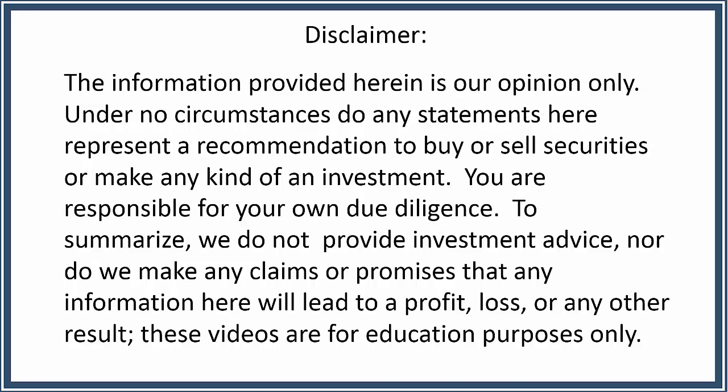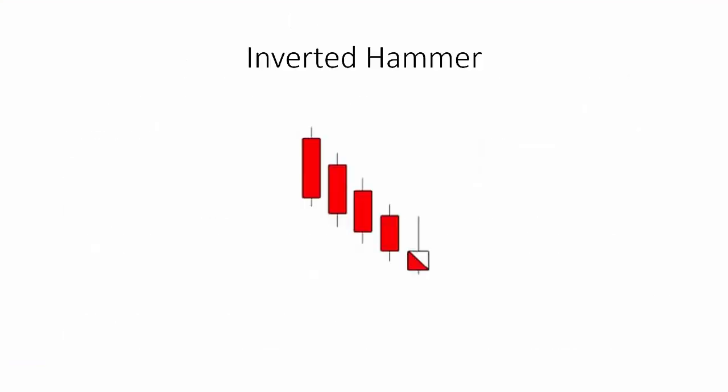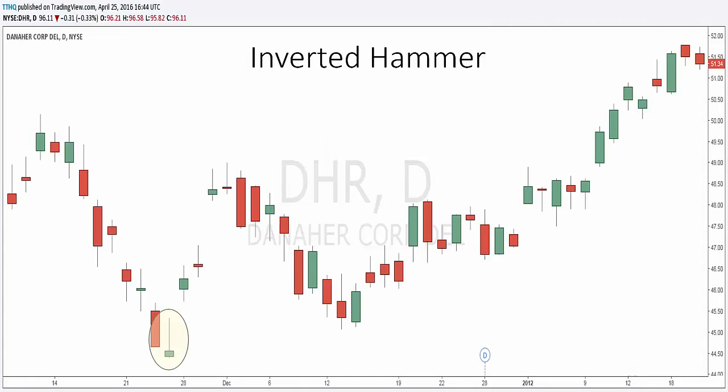These videos are for educational purposes only. The inverted hammer candlestick formation occurs mainly at the bottom of downtrends and can act as a warning of potential reversal upward. It's important to note that the inverted pattern is a warning of potential price change — it's not really a signal to buy. Let's take a look at DHR.